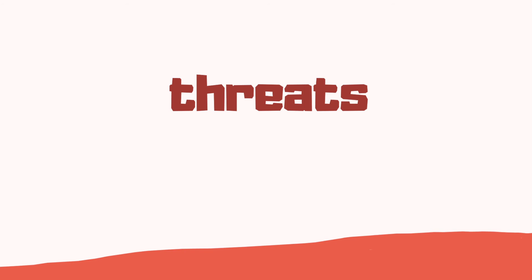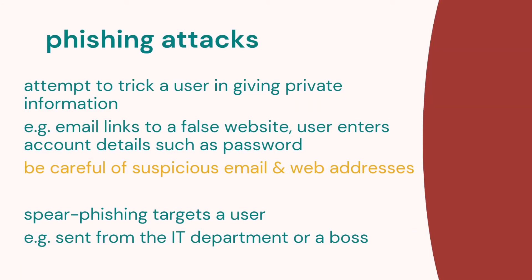Now, what threats are there? Let's look at some threats you may have to be careful of. First, what's a phishing attack? Someone is attempting to trick you into giving your private information. An example might be an email with a link to a web page that isn't the real web page. A type of phishing attack is a spear phishing attack, which is targeted at a certain user. For example, you could get an email that appears to be from your IT department or your boss asking for information, but it's not really from them. These attacks try to trick you into giving private information.